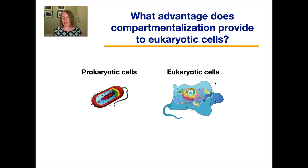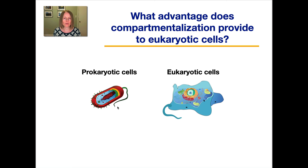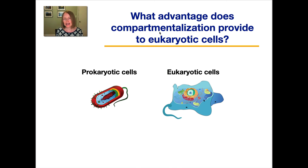The last thing I wanted to discuss is what might be the advantage of having these specialized organelles in eukaryotic cells. One of the big differences between prokaryotic and eukaryotic cells is that prokaryotic cells do not have those membrane-bound organelles, but eukaryotic cells do — they create these little compartments. So I want to leave you with this question: what advantage does this compartmentalization provide to eukaryotic cells? Think about it, write it down, and we'll discuss it in class.